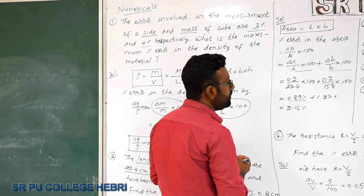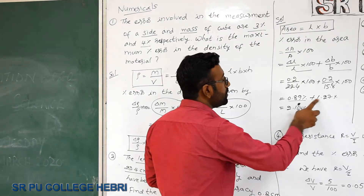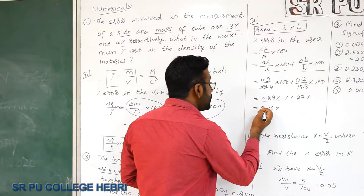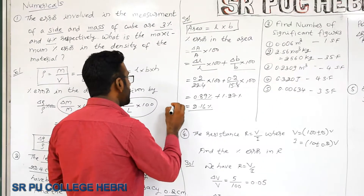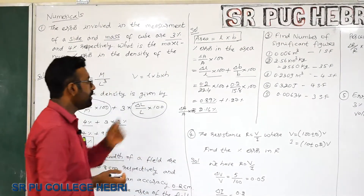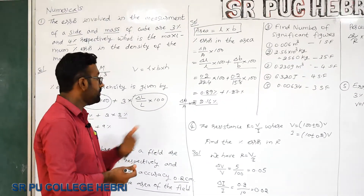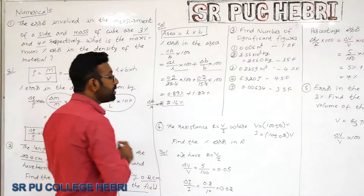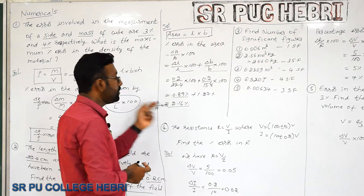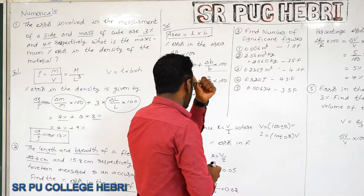Doing the calculation, we get 0.89% + 1.27% = 2.16%. So Δa/a × 100 = 2.16%. This problem is very similar to the first one. Try to solve the first problem, then attempt the second without notes.